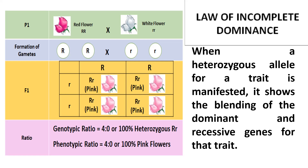Therefore, the genotypic ratio also becomes the phenotypic ratio. The genotypic ratio is 4:0, or 100% heterozygous (uppercase R and lowercase r). And the phenotypic ratio is 4:0, or 100% pink flowers.